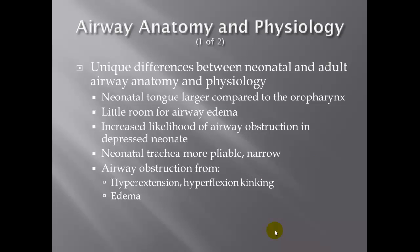Regarding airway anatomy and physiology, there are unique differences between the neonate and adult airway. The neonatal tongue is larger compared to the oropharynx, leaving little room for airway edema and increasing the likelihood of airway obstruction in the depressed neonate. Neonatal tracheas are more pliable and narrow. Airway obstruction results from hyperextension, hyperflexion, or kinking of the neck or edema — this is why we put neonates into a sniffing position. There's a sweet spot, essentially a neutral inline position, and the best way to facilitate that during chest compressions is to slip fingers underneath the scapular areas and perform a two-handed technique.